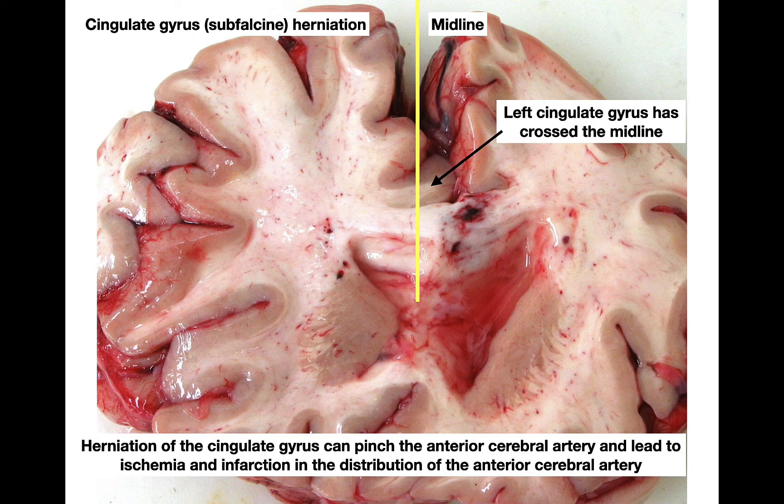This is a cingulate gyrus, or subfascine, herniation. The yellow line shows the midline between the two cerebral hemispheres, and you can see the left cingulate gyrus has crossed the midline, impinging against the corpus callosum and causing some degree of hemorrhage there as well. Cingulate gyrus herniation can pinch the anterior cerebral artery and cause an infarct in its distribution.